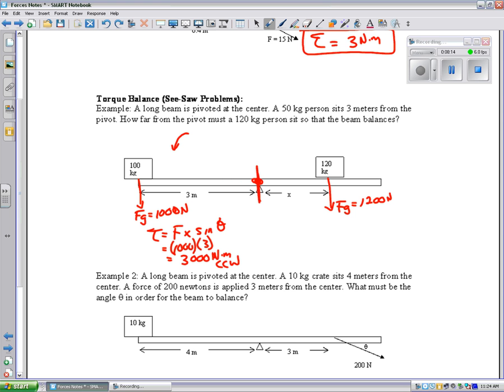On this side, I can do torque equals Fx sine theta. So, it's 1,200 times x equals 1,200x. And, the direction, if I remember, this is my pivot point. This is trying to make it curl this way around the pivot point. So, that's going to be clockwise.